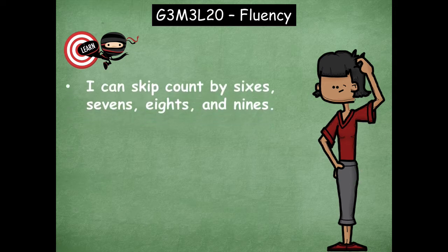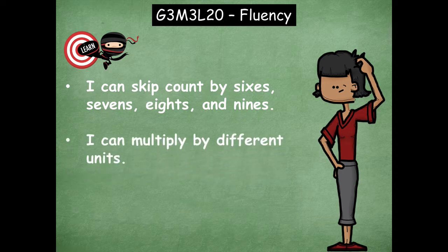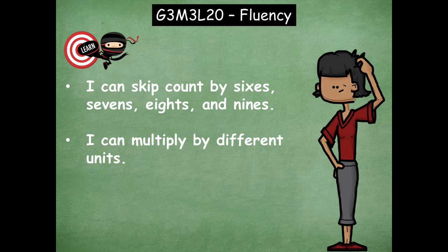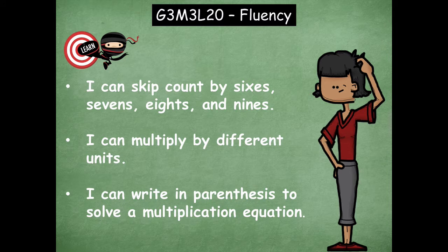Our first learning goal says I can skip count by sixes, sevens, eights, and nines. Our second learning goal says I can multiply by different units — that means instead of multiplying by like two times three, we might do two tens times three. Then we're going to write in parentheses: I can write in parentheses to solve a multiplication equation, placing them wherever we find it easiest to solve the multiplication problem.